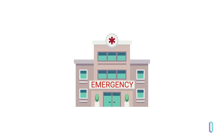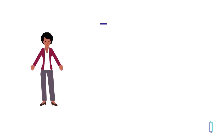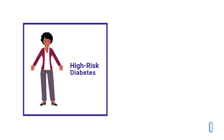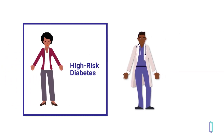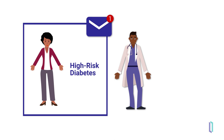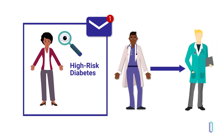He can also review Marla's appointments. Marla is a member of the high-risk diabetes cohort. Dr. Gupta can review cohort notifications that remind him of examinations needed to manage risks associated with diabetes. He sees that Marla is overdue for an eye examination to screen for diabetic retinopathy and refers her to an ophthalmologist.